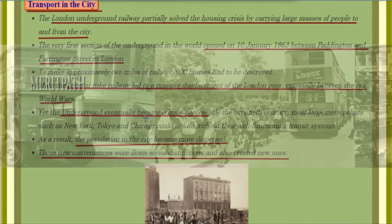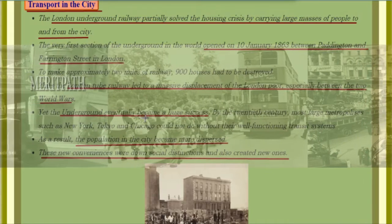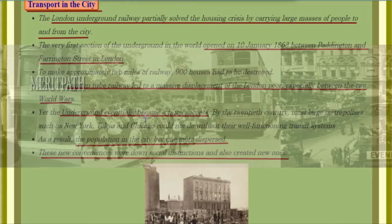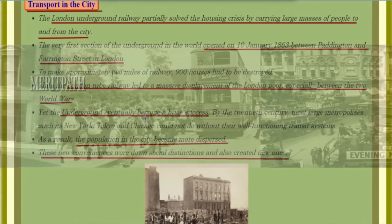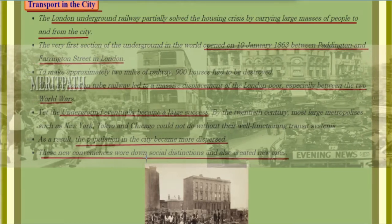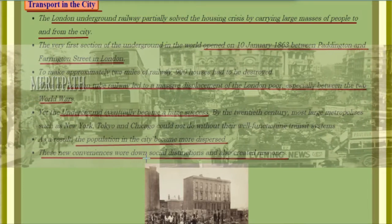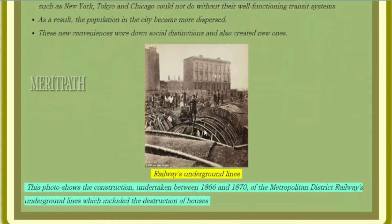Yet the underground eventually became a huge success. By the 20th century, most large metropolises such as New York, Tokyo, and Chicago could not do without their well-functioning transit systems. As a result, the population in the city became more dispersed. These new conveniences wore down social distinctions and also created new ones. The construction between 1866 and 1870 of the Metropolitan District Railway underground lines included the destruction of many houses.